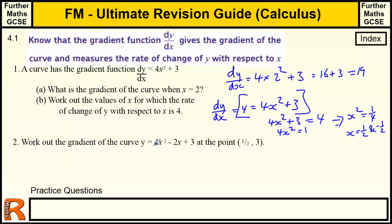Work out the gradient of the curve y equals 4x squared minus 2x plus 3 at the point (½, 3). To work out the gradient of the curve we need to find the gradient function, which is dy by dx. It helps if you've done section 4.3 on differentiation, but I'll go through it again here. We differentiate each term separately, one at a time.